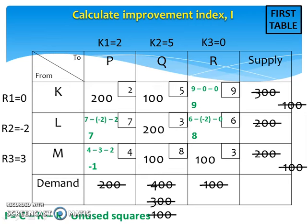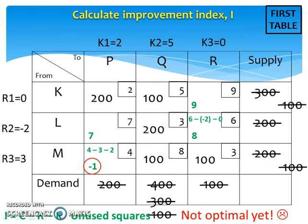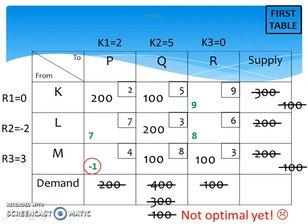Since there exists a negative improvement index, the problem is not optimal yet. Now, what we need to do is draw a loop for the square with the negative improvement index.